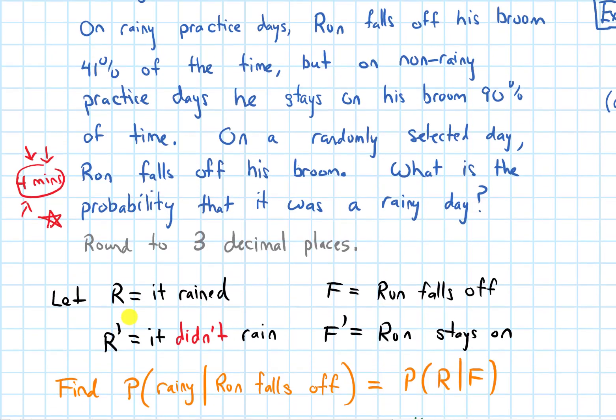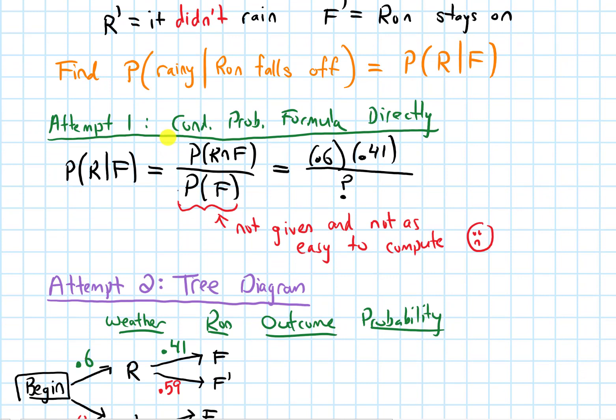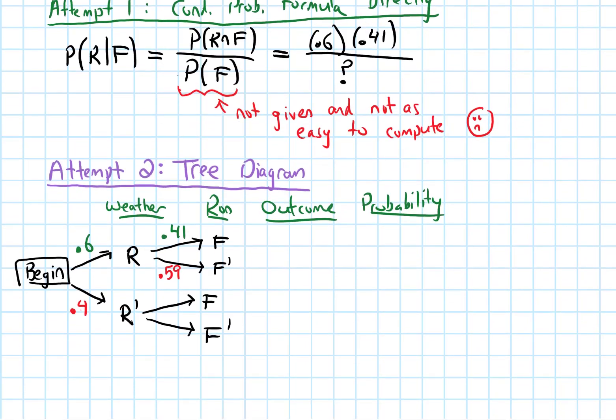The question also says that on a non-rainy day, he stays on his broom 90% of the time. So we'd write 0.9 going to F complement, because that's staying on his broom. That means going to the F here, it's a 0.1 for those to add up to 1.